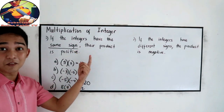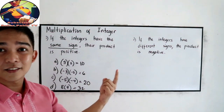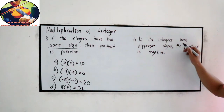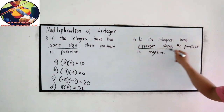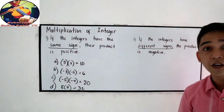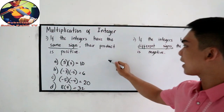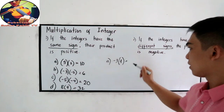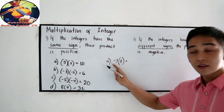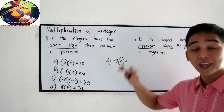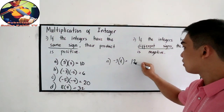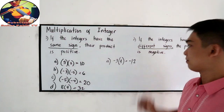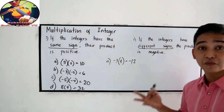Put that in your mind: if they have the same sign, the product is positive. Next: if the integers have different signs, their product is negative. For example, negative 3 times 4 — negative and positive — so 3 times 4 is 12, and the sign is negative because they have different signs.